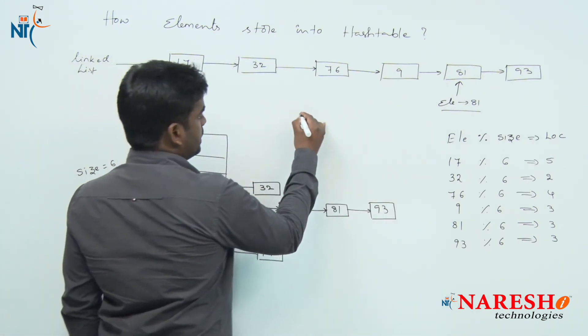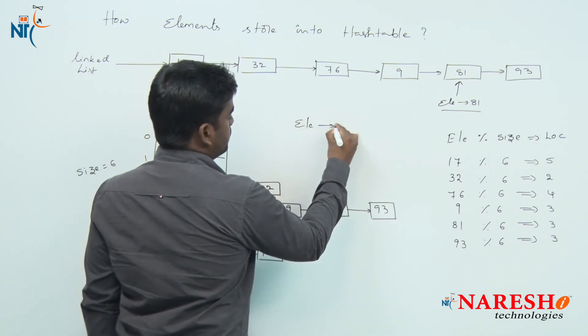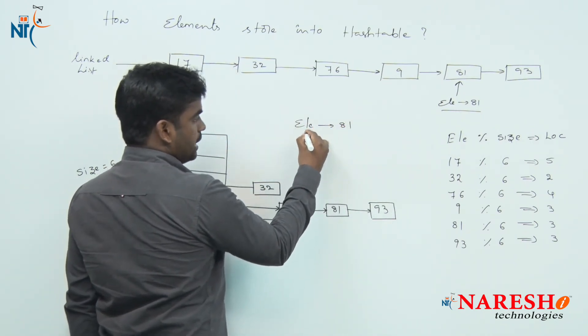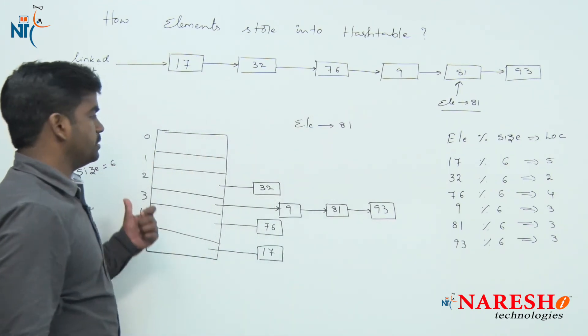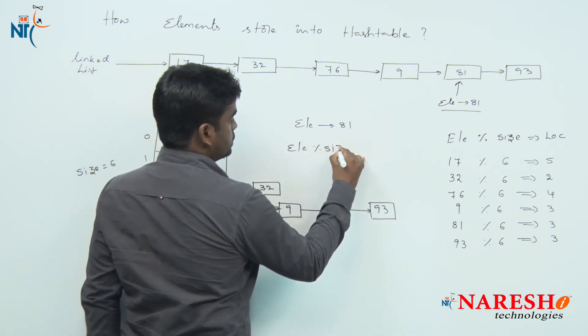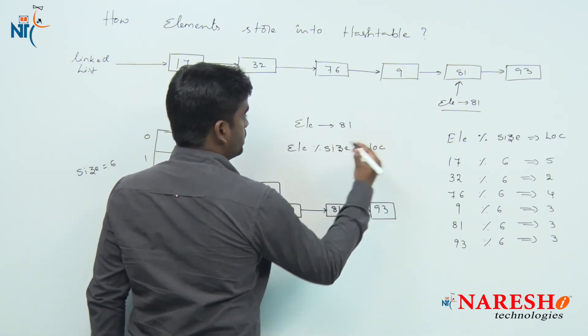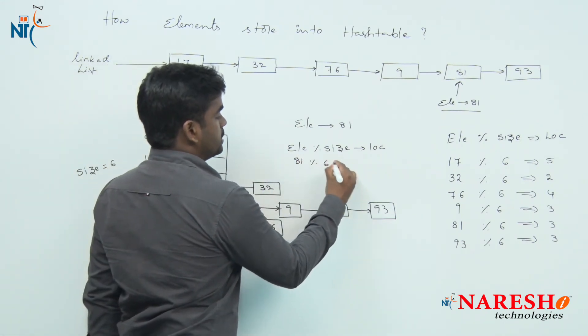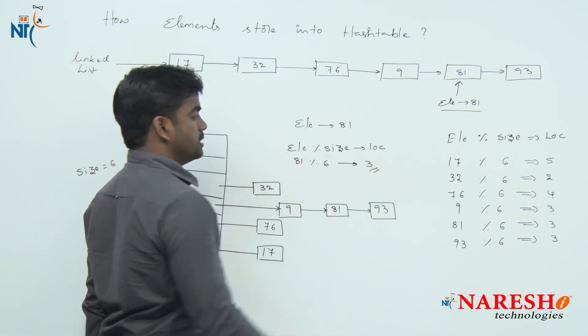But here in the hash table, if you want to search for an element, element is 81, simple. With the help of the size of the hash table you need to perform element mod size, you will get the location. Same story. Location here is 81 mod 6, so the location is 3.